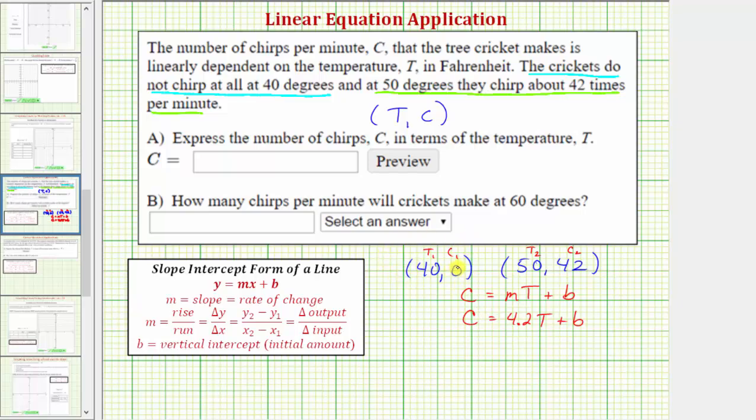Let's substitute 0 for C and 40 for T. This gives us the equation 0 equals 4.2 times 40 plus B. So we have 0 equals 4.2 times 40 equals 168. So we have 0 equals 168 plus B. Solving for B, we subtract 168 on both sides, and we have B equals negative 168.